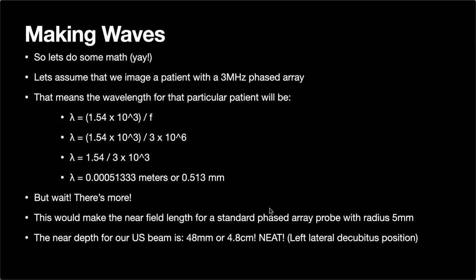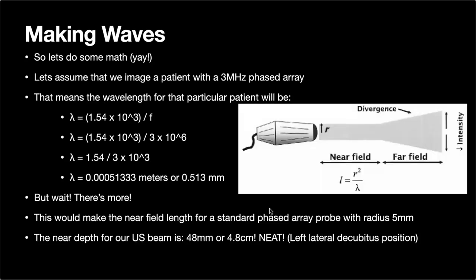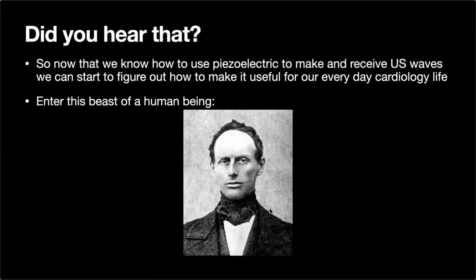Plugging in the near field equation at three megahertz, the near field is actually 4.8 centimeters. For cardiology residents: when the echocardiography technologist says to have patients roll onto their side or bring the heart to the chest wall, it's because you can utilize the near field advantages of the ultrasound probe. Getting the heart closer means the near field encompasses more of the heart structure, giving you much better image quality.